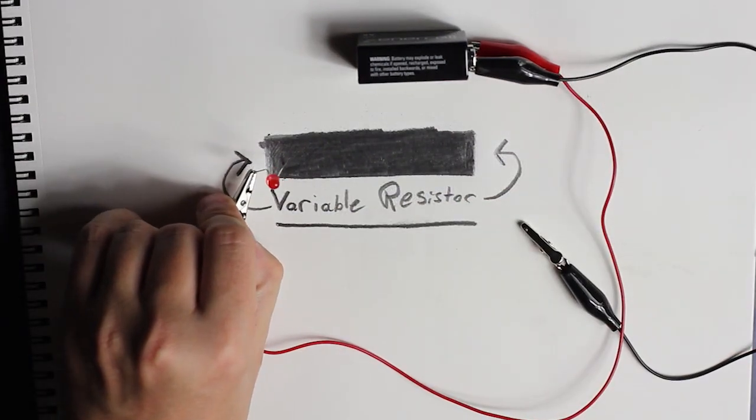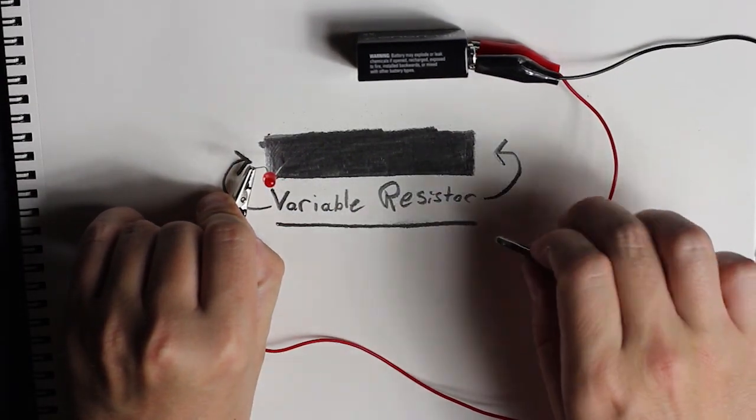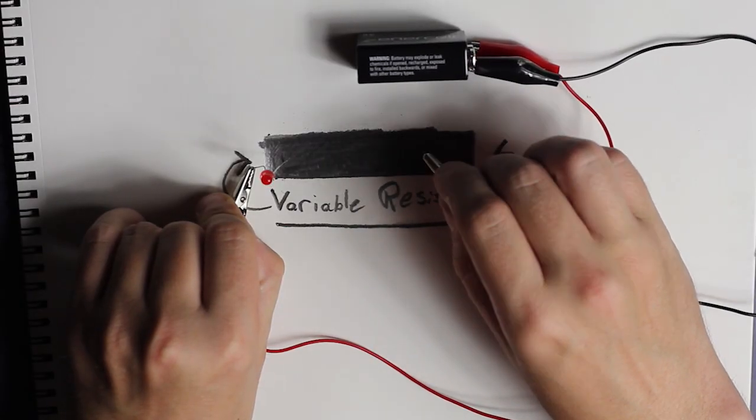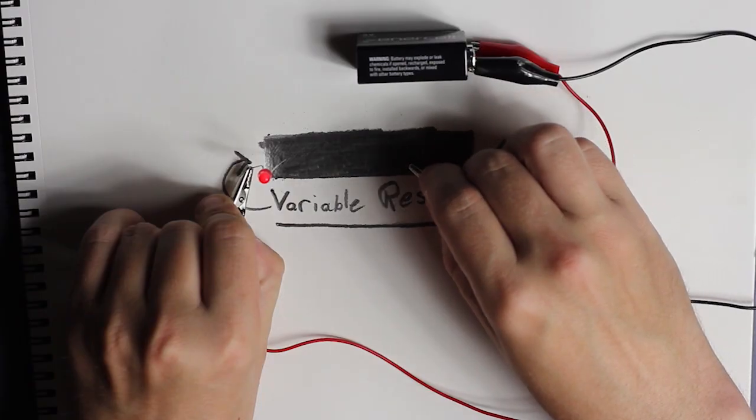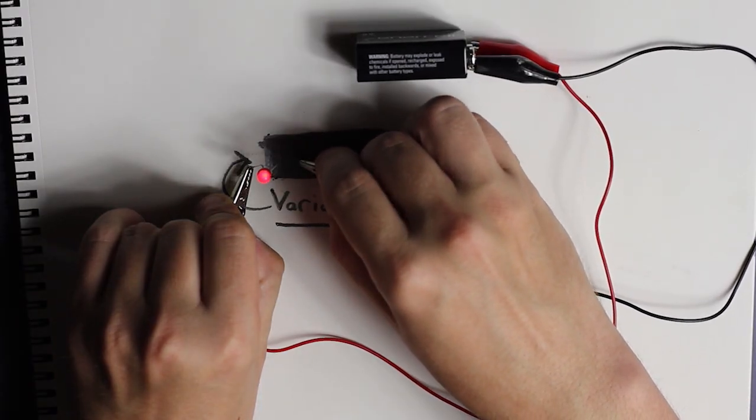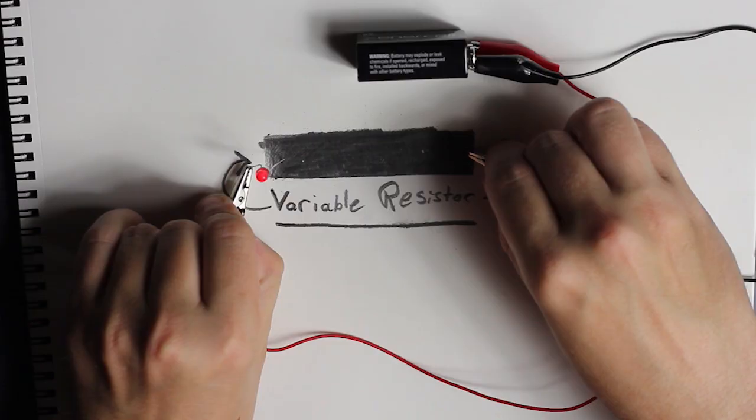Now, an LED typically requires 3.5 volts to power up, and going too far above that could nuke the light itself. Due to the resistive properties in the graphite, we're actually able to cut that power flow down to a more reasonable amount, which will power the LED safely.